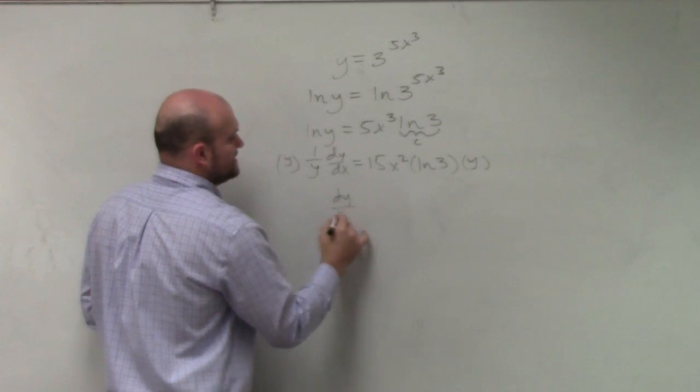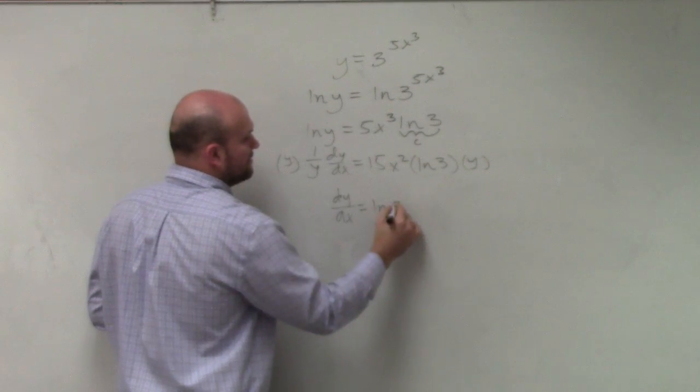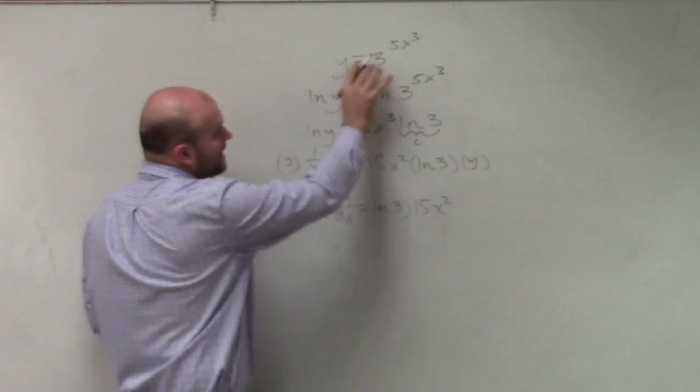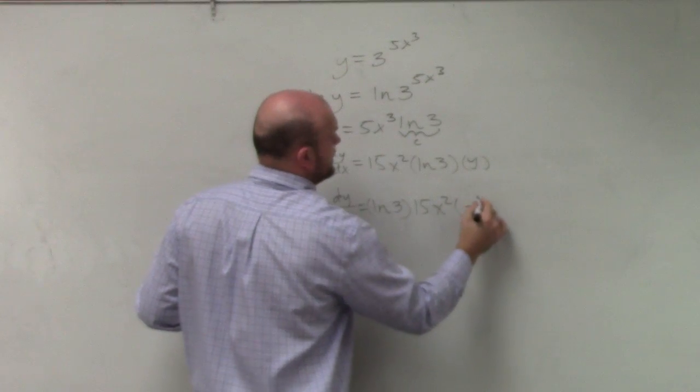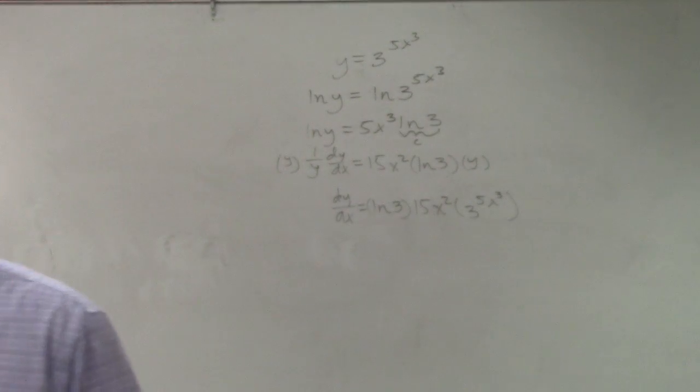So dy/dx equals, put the ln of 3 in front, ln of 3 times 15x² and then y is 3^(5x³). And that's it.